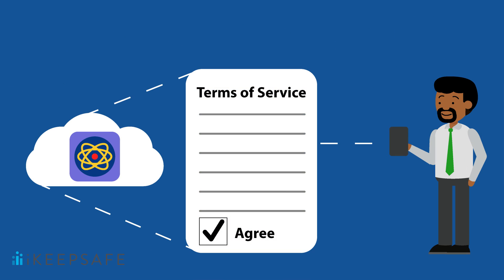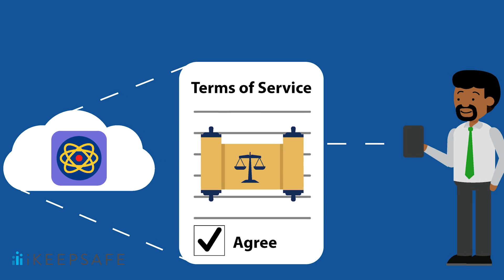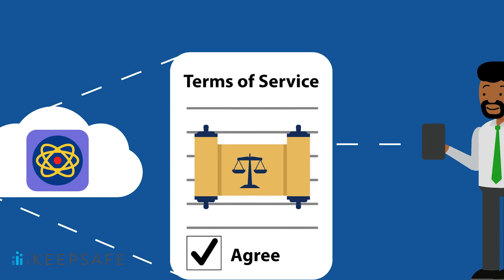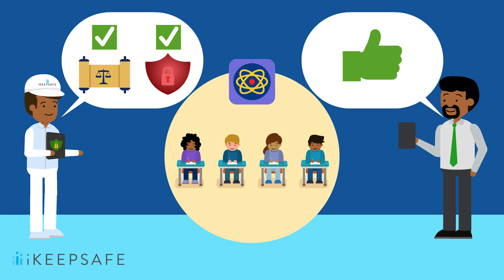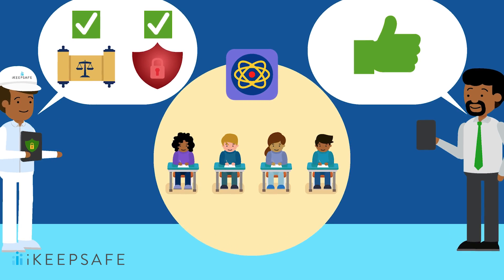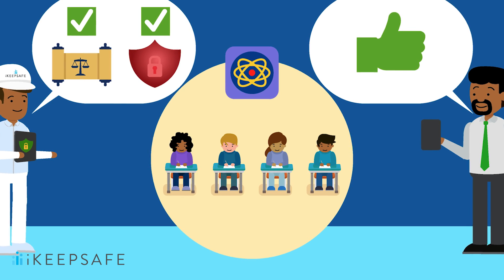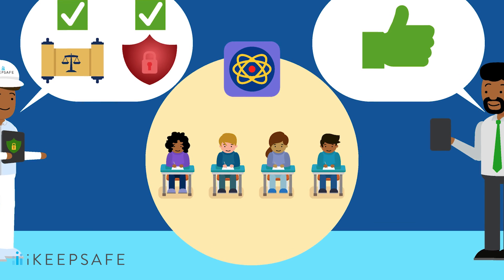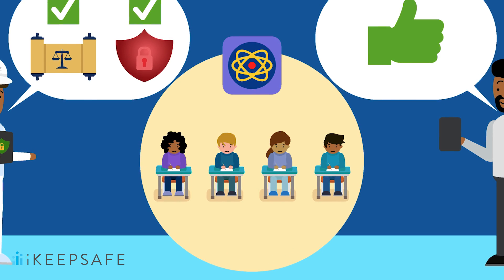First, make sure that the product has a clear Terms of Service document. A Terms of Service document is a set of rules that users agree to follow in order to use an online service. These agreements are legally binding, though the company is free to change them. In order for your students to be able to use a product, the Terms of Service must not contain terms that violate the law or fall short of acceptable safety practices.